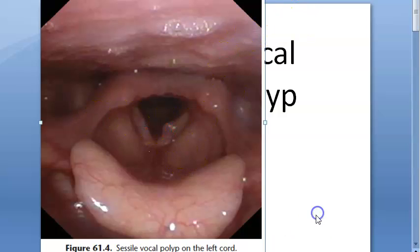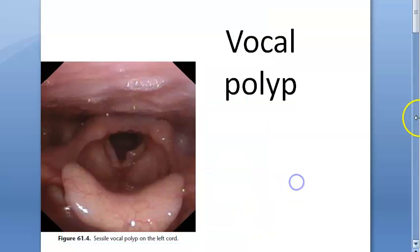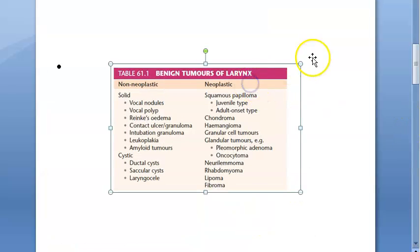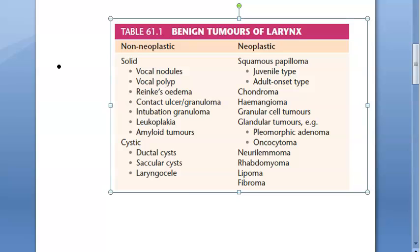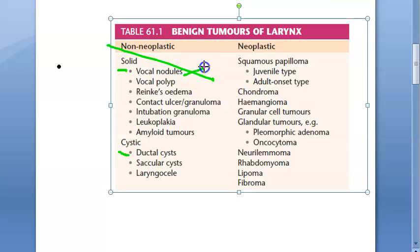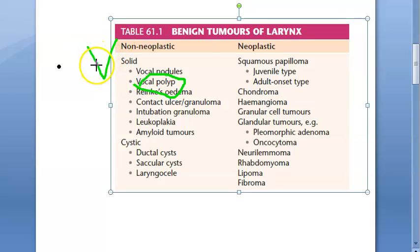The polyp flops up and down — that is a vocal polyp. In benign tumors of the larynx, we have non-neoplastic conditions. Under solid and cystic categories, solid includes vocal nodules and vocal polyp. Vocal nodules are bilateral, just like dots, but vocal polyp is unilateral and a little bigger.